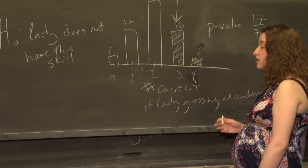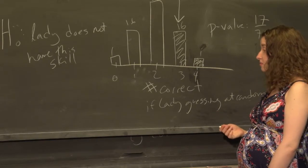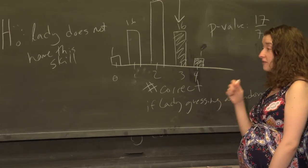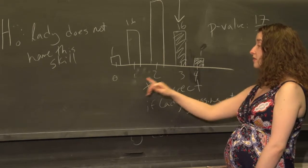Then we come up with what's called a test statistic, some summary of our data that's just one number. Here, the lady picked out four cups—that was our data—and our statistic is the number of cups she got correct.